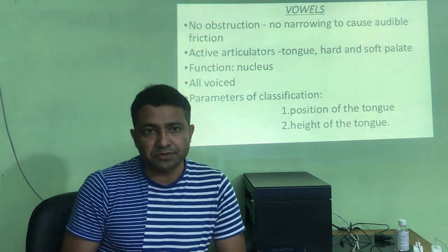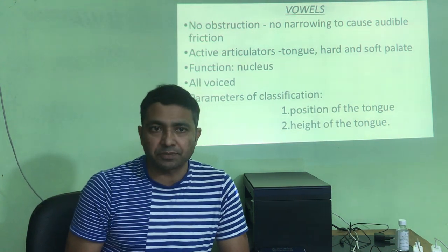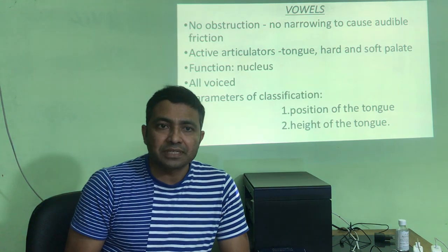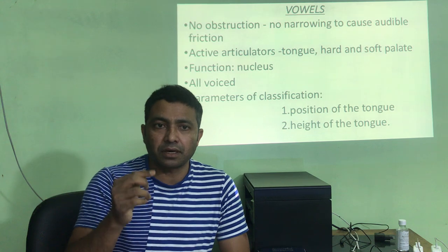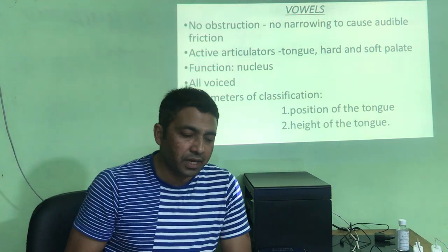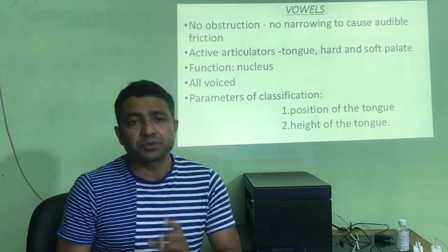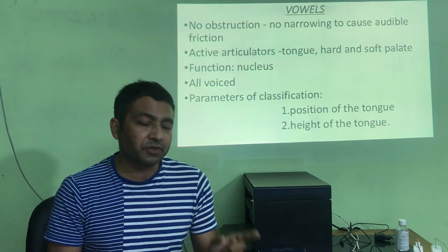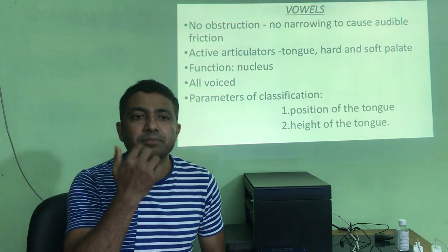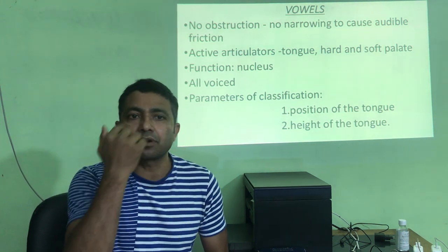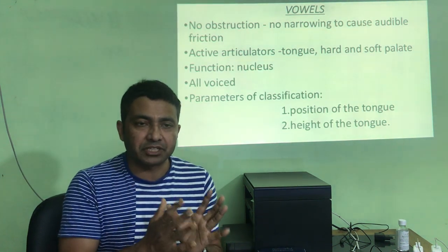The other parameters for classifying vowel sounds are the position of the tongue and the height of the tongue. During the pronunciation of a particular vowel, you must say at which position the tongue is active and how high the tongue is raised. Another thing to mention — though I haven't written it here — is the position of the lips. For example, when you say /e/, what is the lip position? Flat or round? When you say /u/, it is rounded. You have to mention this.